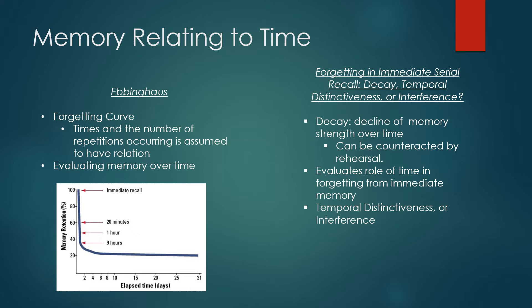In Ebbinghaus's article, he mentions his assumptions that the time taken to memorize and the number of repetitions occurring have a relation between those two. I think this can relate to rehearsal, as the forgetting and immediate serial recall article mentions when it discusses countering decay. However, the forgetting and immediate serial recall article evaluates the role of time in forgetting from immediate memory rather than memory over time.